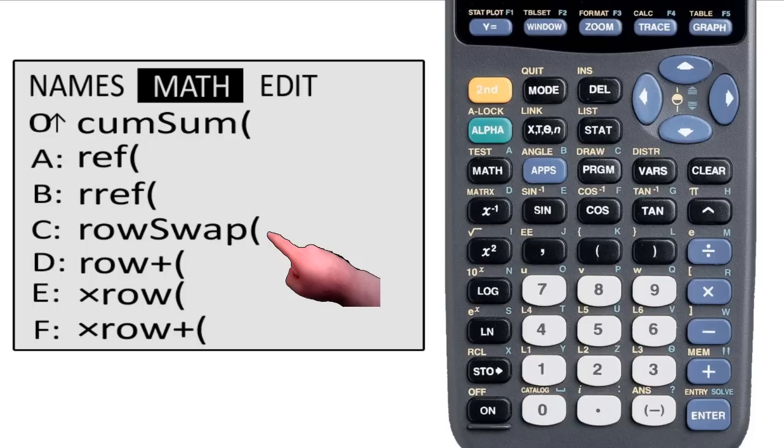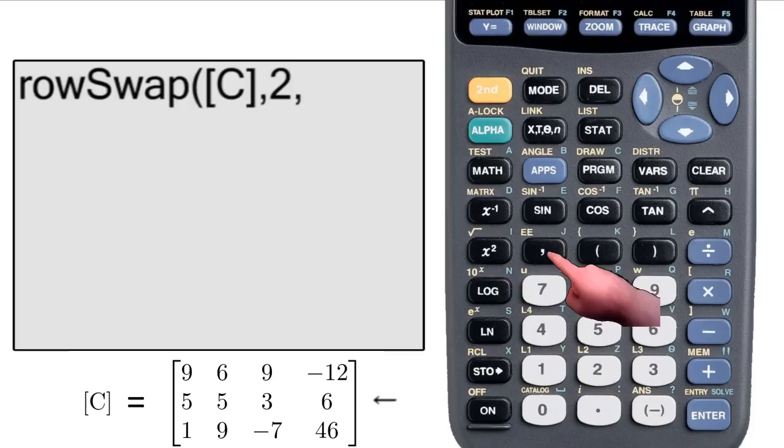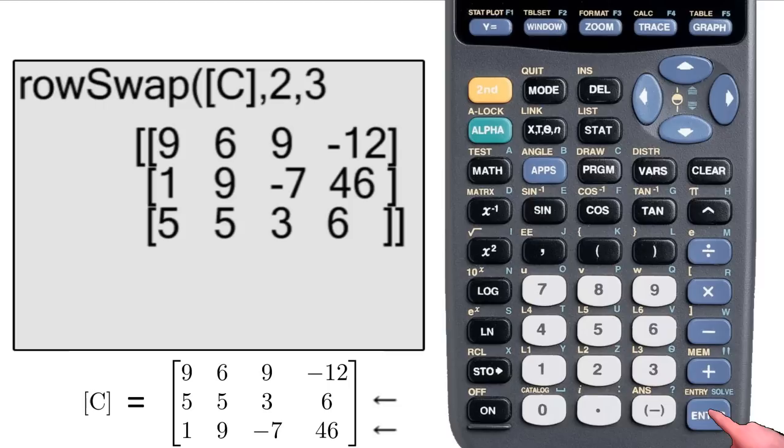To use row swap, select it from the menu. Select the matrix you want to use. I'll use the same one as before. Hit comma. Enter the number of the first row you want to swap. Hit comma. Enter the number of the second row you want to swap. Then hit enter or close the parentheses if you need to.